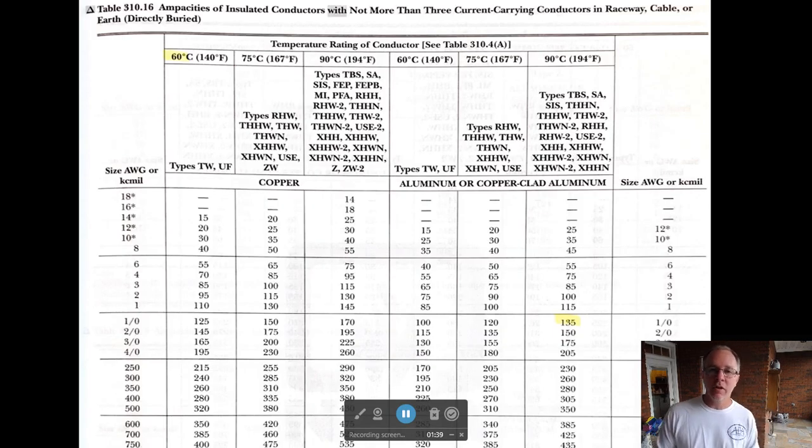That's going to be your maximum ampacity of that wire if those conditions are met. Here's the chart, Table 310-16. We've got to find 2-Aught. You look on the left-hand side and it says size AWG, American Wire Gauge, or KC mill, which is for bigger wires. We're going to find 2-Aught, so that's 2-0. That's our wire size.